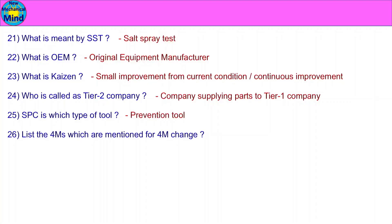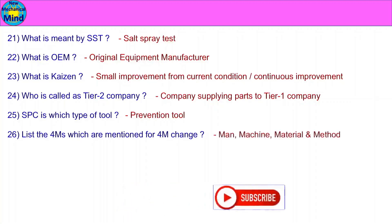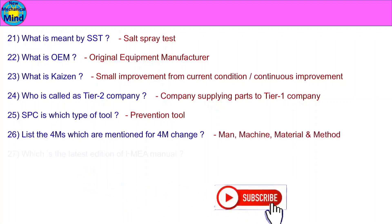List the factors mentioned for process changes. The factors are: Man, Machine, Material, and Method.